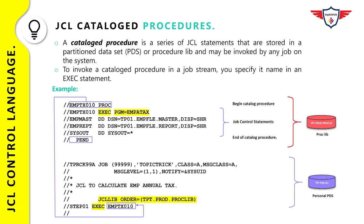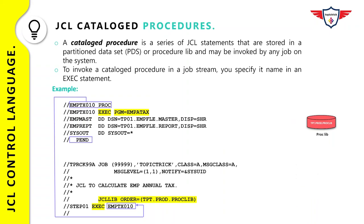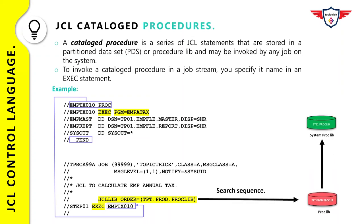Let's look at the search sequence for this example. Because JCLLIB is specified, the system will first search for the catalog procedure in the personal PDS TPT.PROD.PROCLIB. If the catalog procedure is not found in the private library, the system will then try to retrieve it from the system library SYS1.PROCLIB. Otherwise it retrieves it from the private library and continues execution of the job.